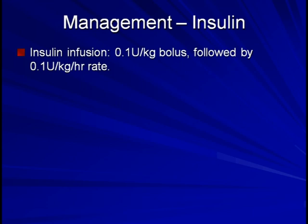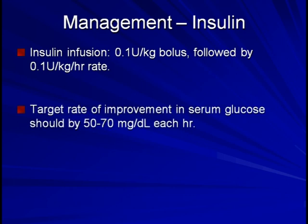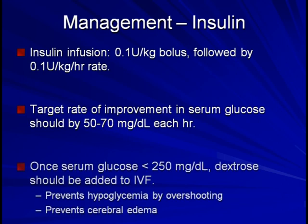We are not aiming to immediately or rapidly bring down the glucose back to normal. Rather, we are targeting a rate of improvement of no more than 50 to 70 milligrams per deciliter each hour. Remember that glucose is osmotically active, therefore dropping the serum concentration too quickly has the same risk of precipitating cerebral edema as decreasing the serum sodium too quickly. Once the serum glucose is below 250, dextrose should be added to whatever IV fluid you're using. This prevents hypoglycemia by overshooting and also helps to prevent cerebral edema.